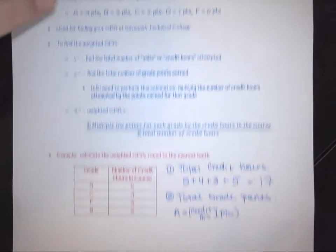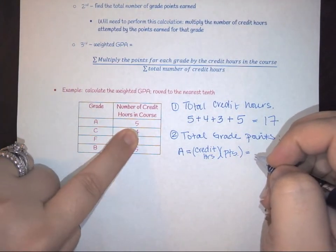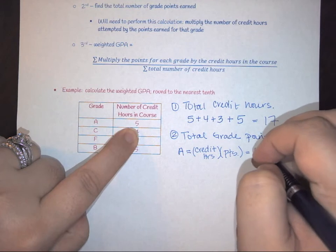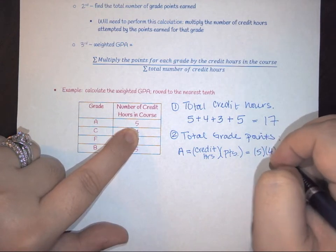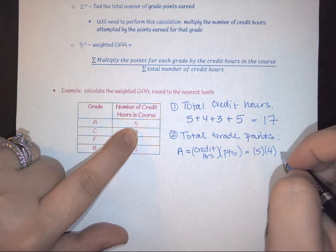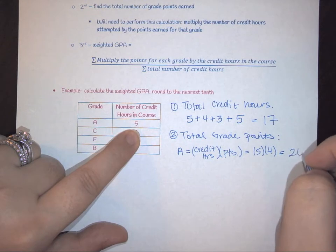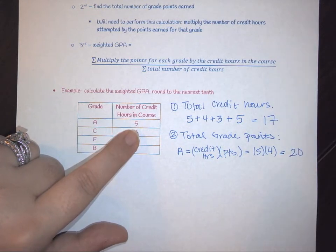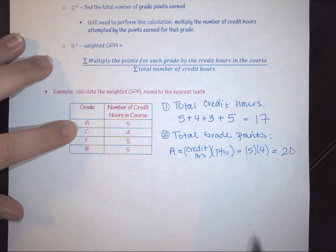So I took five credit hours, so this is 5 times the points earned which would be 4. When I multiply that together, that is going to give me the total points that I earned for that class, 20. We have to repeat that process for all other letter grades that we have here.